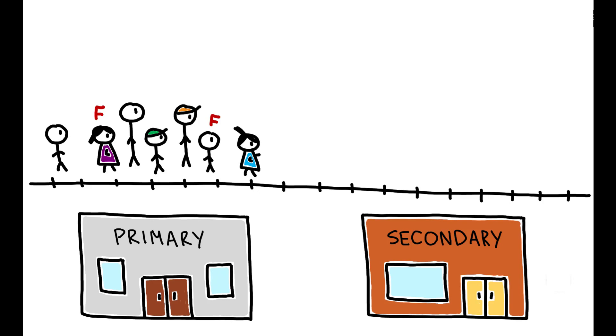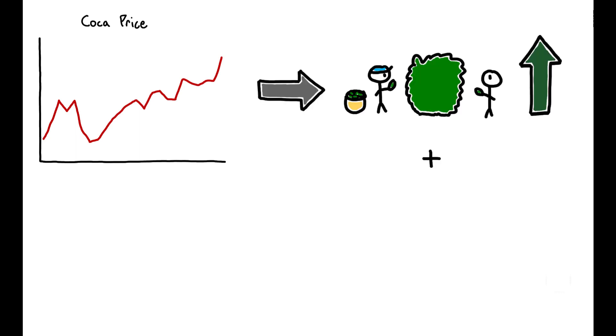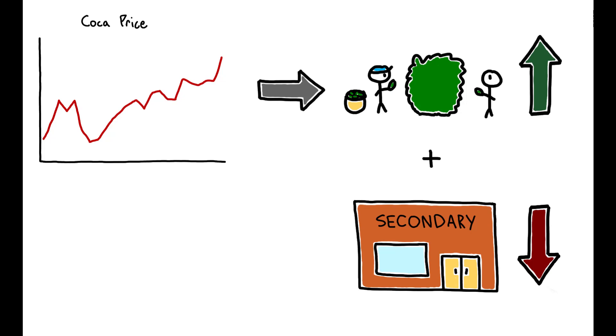At the secondary school level, there is a large decline in enrollment rates at precisely the stage when students transition between primary and secondary school. In contrast to their younger counterparts, it appears that older students leave school entirely in order to work full-time. Thus, in the short run, an increase in the financial returns to coca farming increases child labor in the industry and reduces educational achievement.